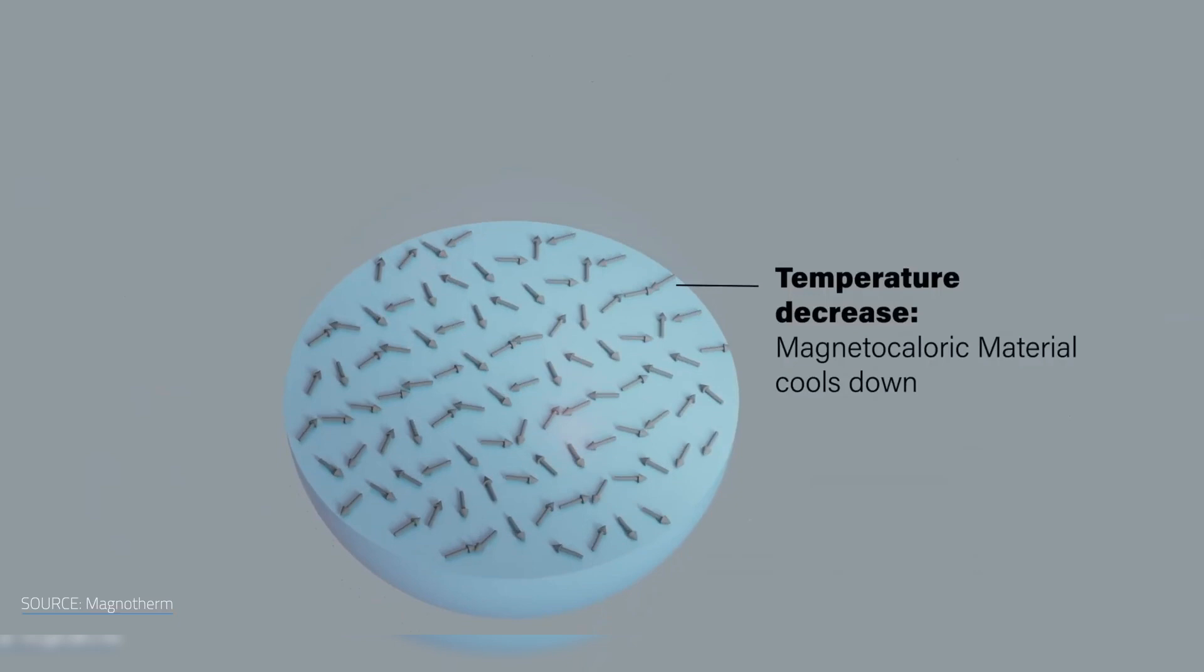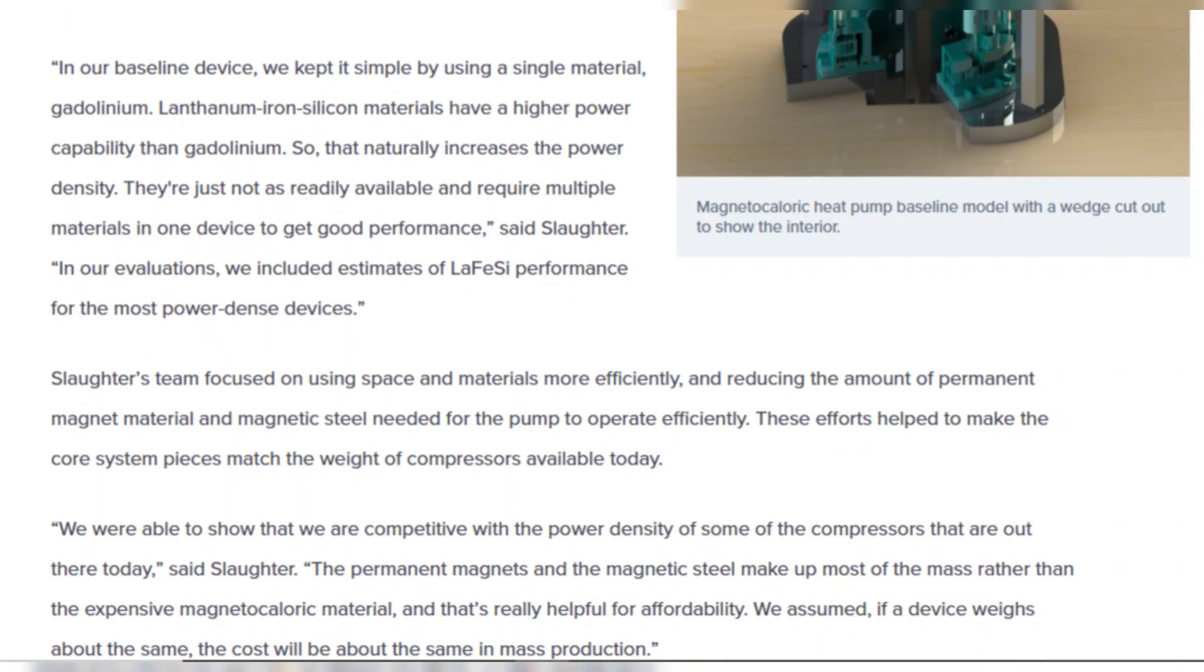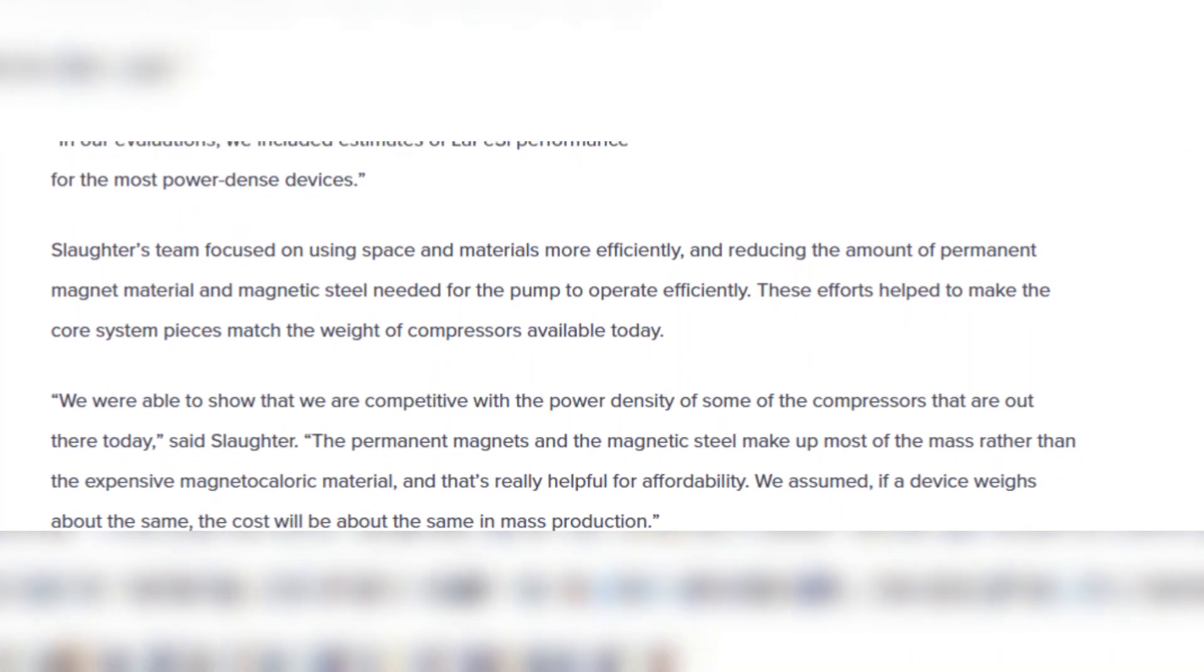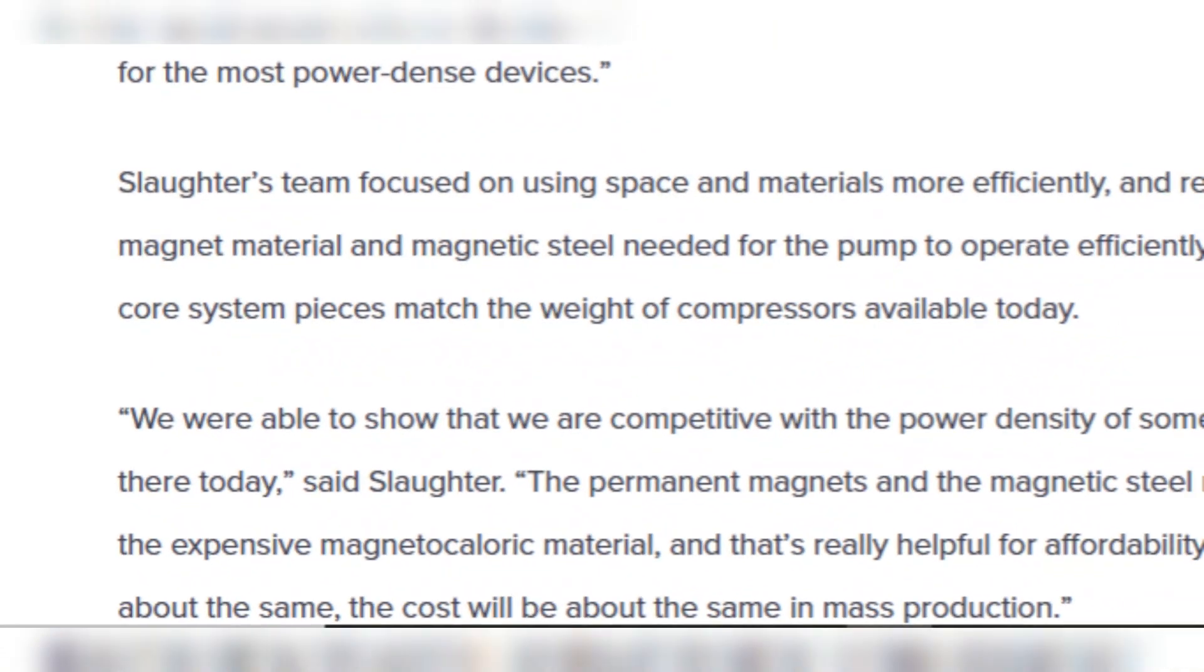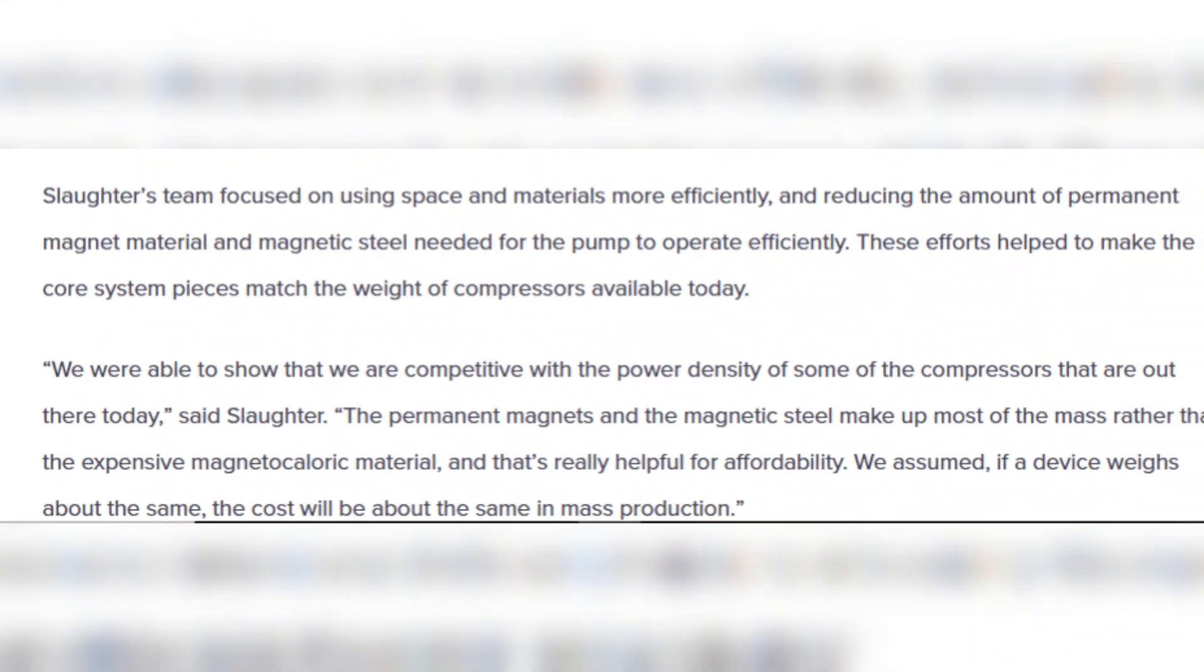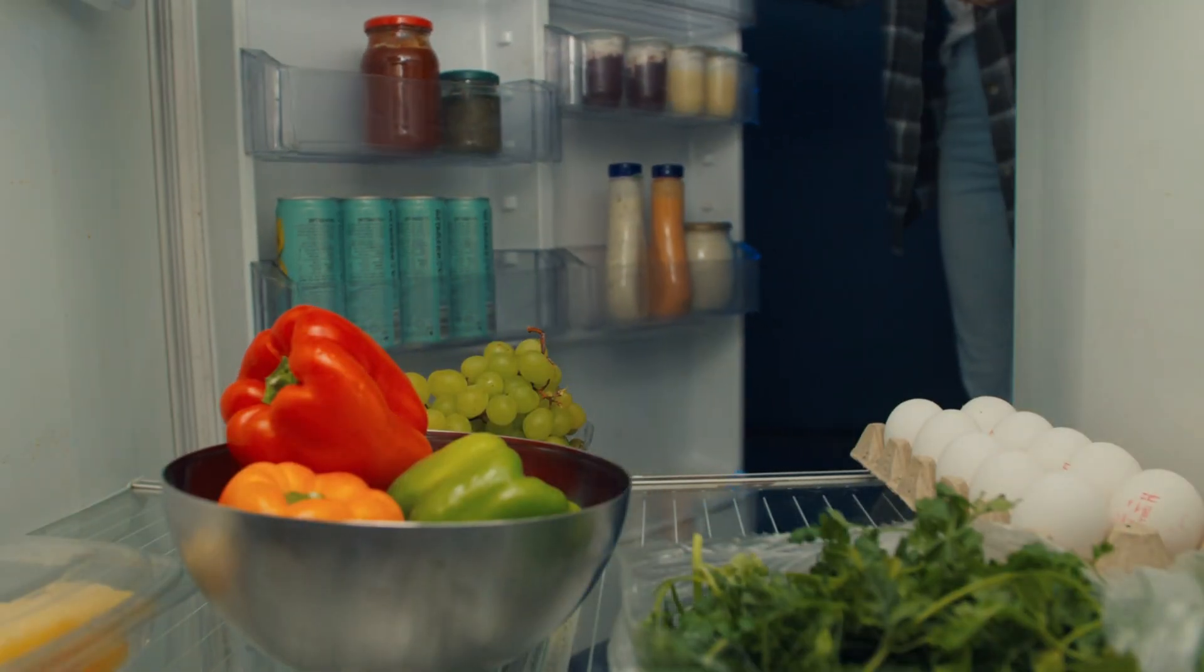That's a huge step toward making these systems compact and cheap enough for home use. The Ames team estimates it'll take another three to six months to fully evaluate performance. But their projections already suggest magnetocalorics could rival traditional systems up to one kilowatt of cooling power. Enough for many residential applications.